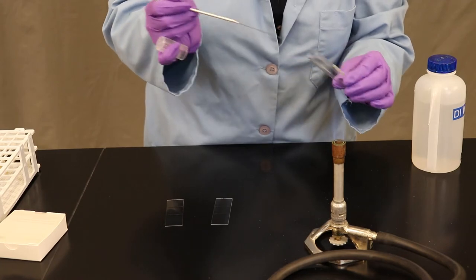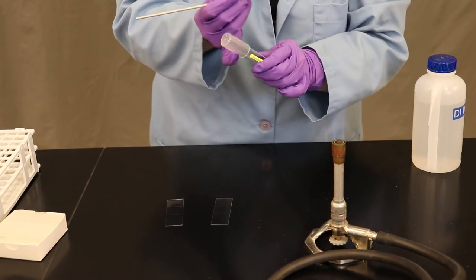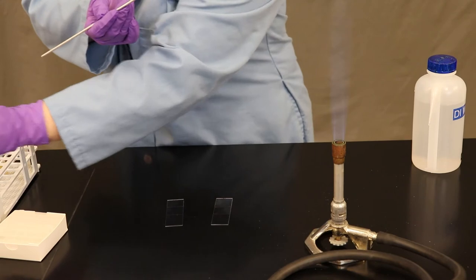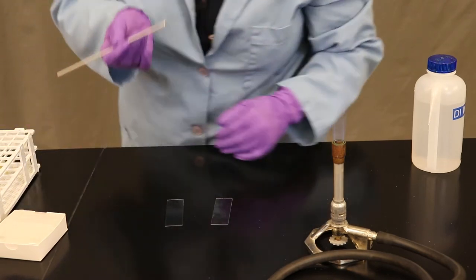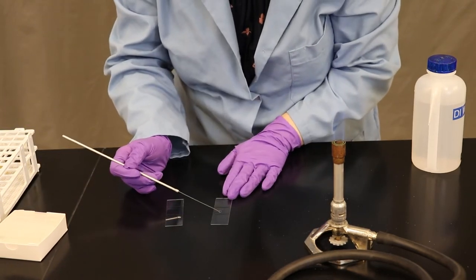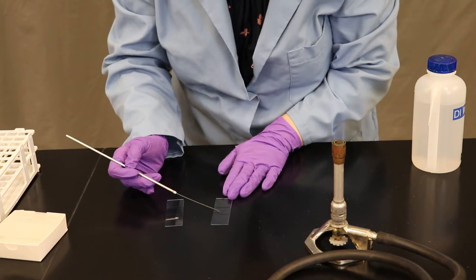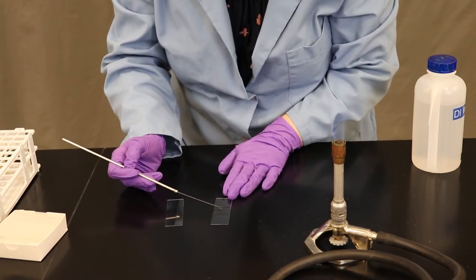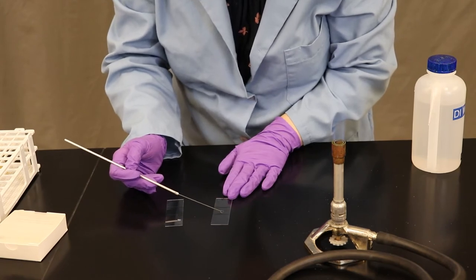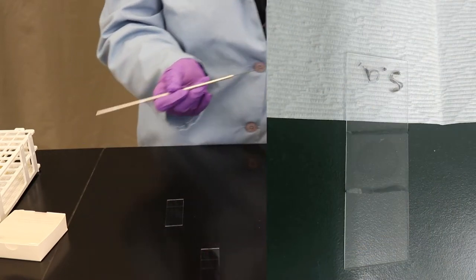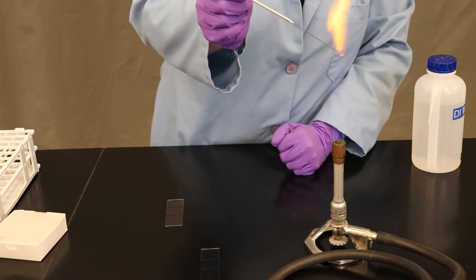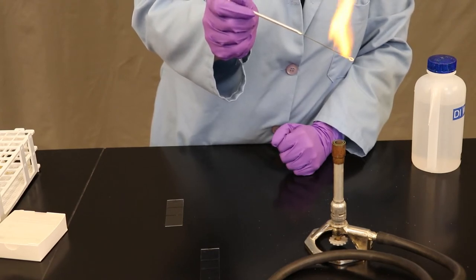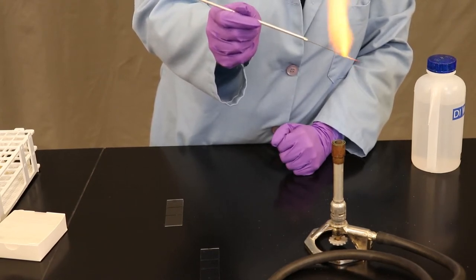Next, dip your sterile loop in the broth to pick up the culture. Pass it through the flame one last time and set it down. We're going to tap off any of the liquid from your culture onto the glass slide and mix it within the boundary that you marked. Be sure to sterilize your loop one more time before setting it down or before dipping into your next culture.